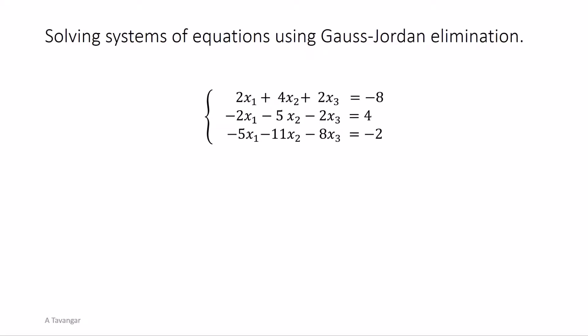Hello everyone. In this video we will solve a system of three equations and three variables using Gauss-Jordan elimination. Along the way we will also learn how to set up the augmented matrix for a system and how to carry it to row echelon and reduced row echelon forms.